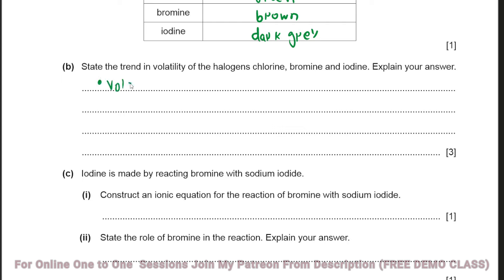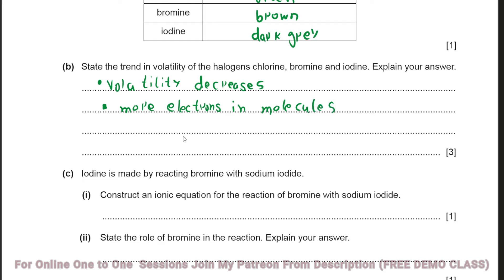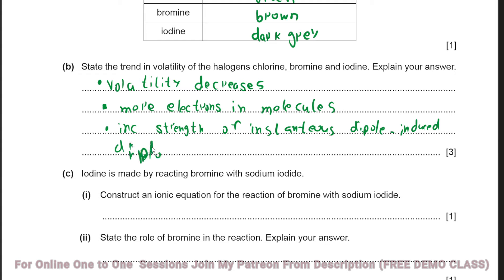So the answer is: volatility decreases down the group because there are more electrons in the molecules, leading to increased strength of instantaneous dipole–induced dipole forces.